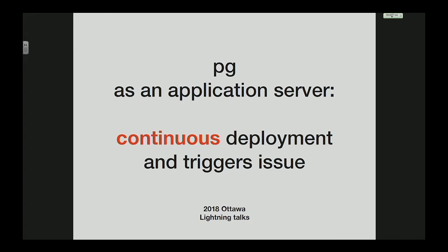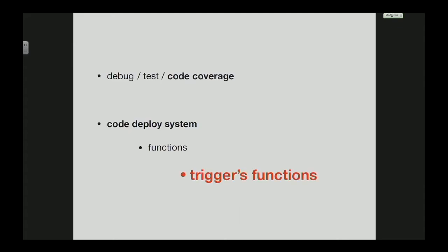When we think of Postgres as an application server, we have to think about deployment and all related issues like debug, test, and code coverage, which is a hard thing. We need to do some code deployment system for functions. Of course, triggers consist of functions. And now I will show some problems with trigger functions.